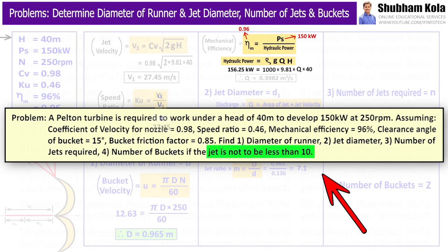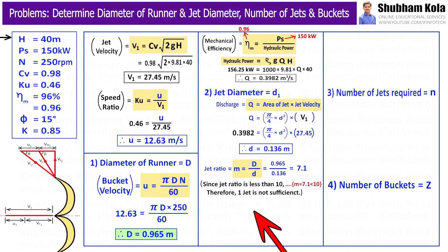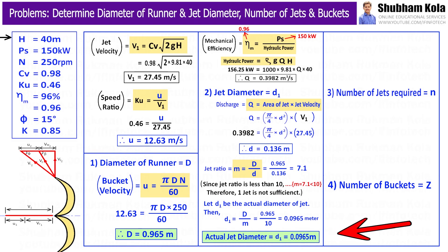But in the problem, they have mentioned that jet ratio is not to be less than 10. Therefore here one jet ratio is not sufficient. Therefore I will take jet ratio m equal to 10 and I will replace d with d1 which is actual diameter of jet. From here, the actual diameter of jet we got as 0.0965 meter.